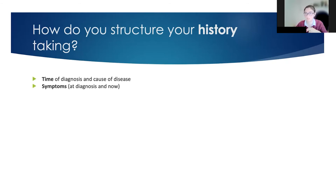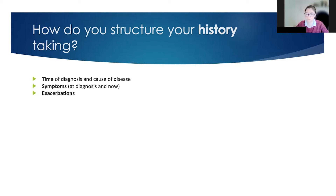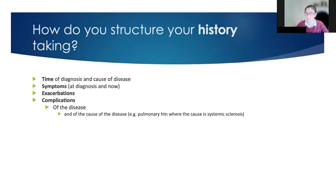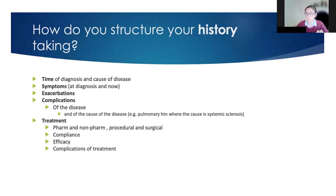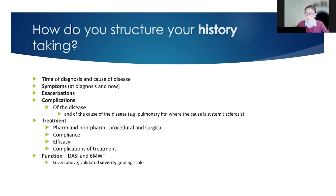Exactly as Mason said: time of diagnosis, cause of the disease — important to pick up, and applies differently to some conditions. For example, if the patient has a cardiomyopathy, you may want to know if that's congenital or acquired. Symptoms at diagnosis versus symptoms now give you an idea of severity but also stability. Exacerbations or decompensations again indicate severity and stability. Then complications of the disease — broken down by systems — and treatment: pharmacological, non-pharmacological, procedural, and surgical.